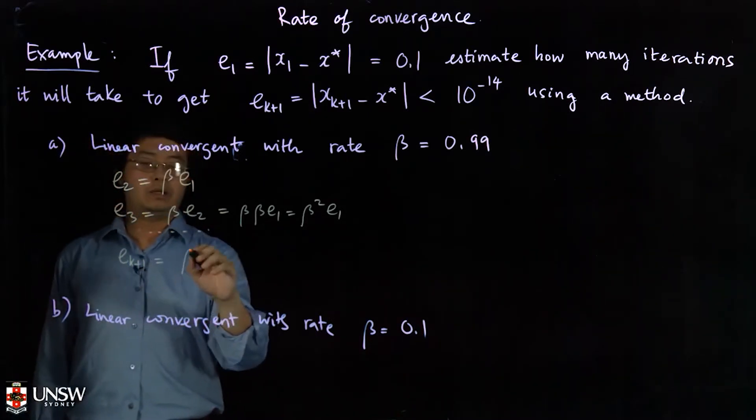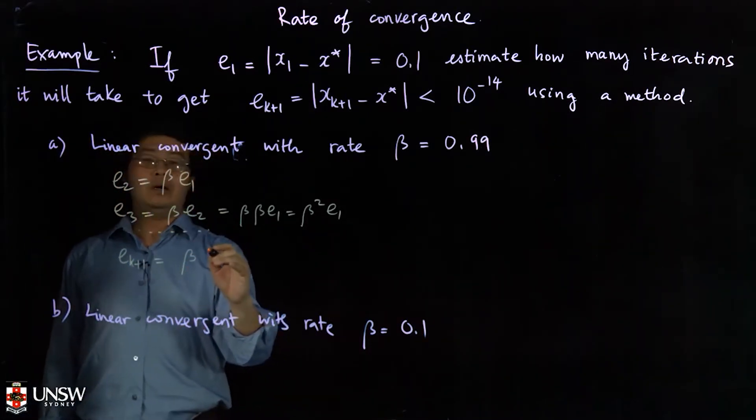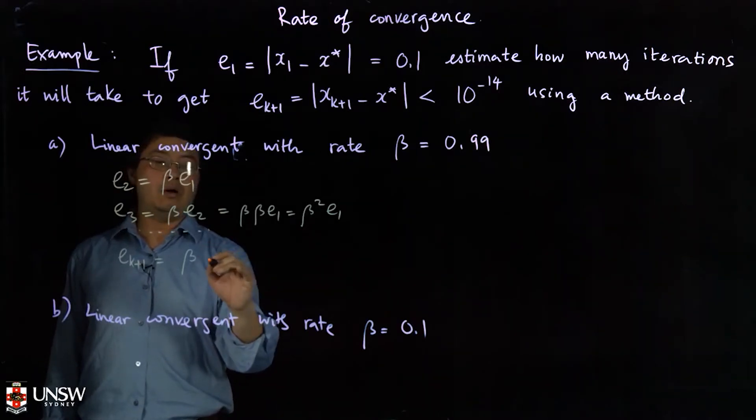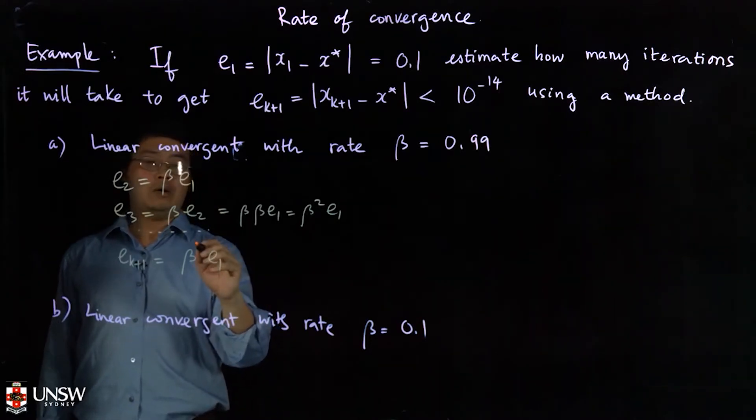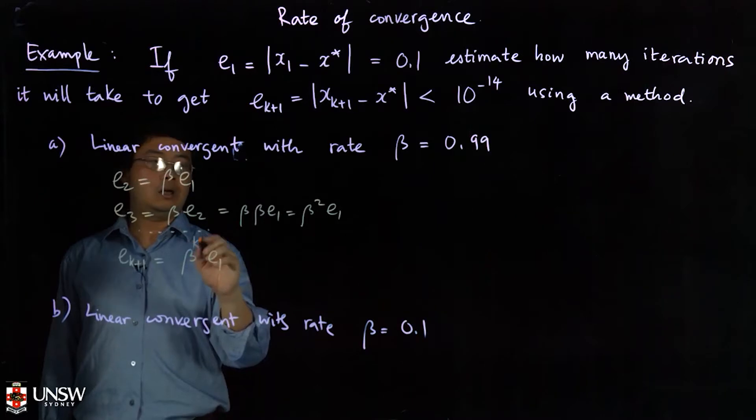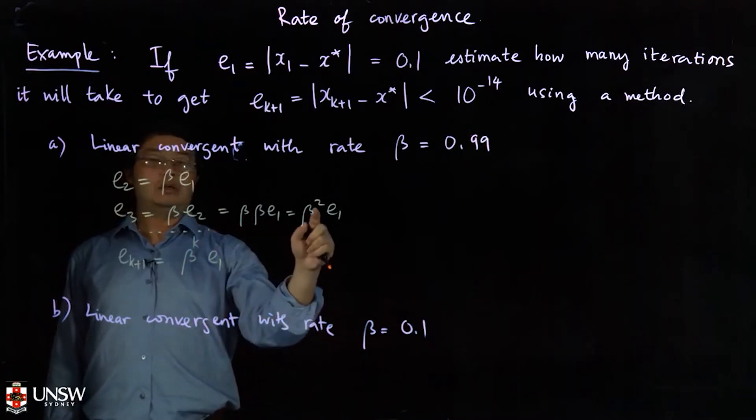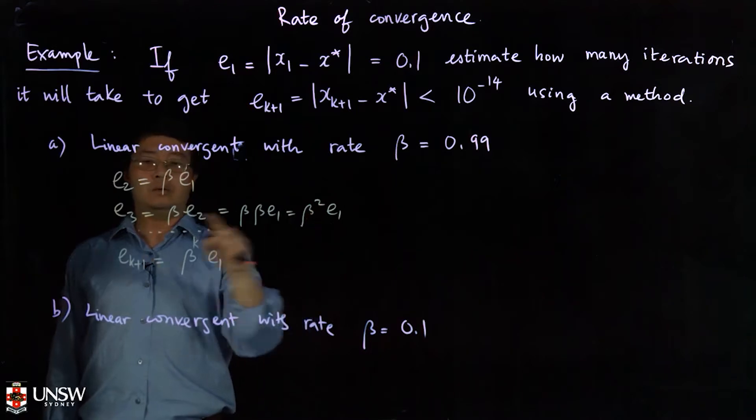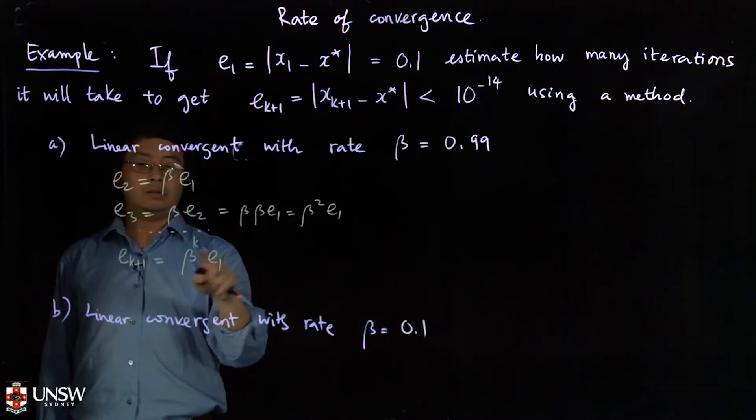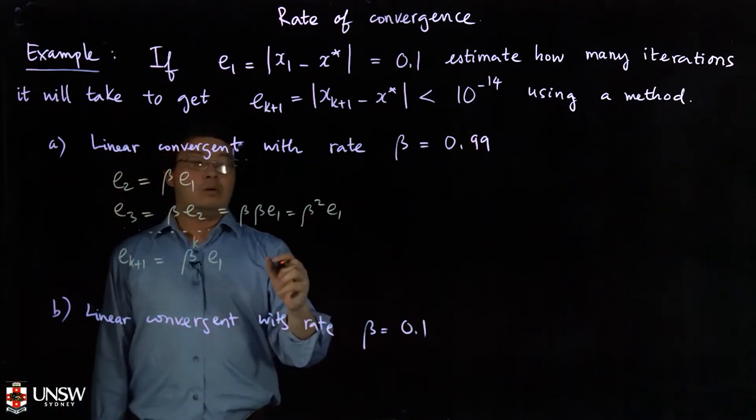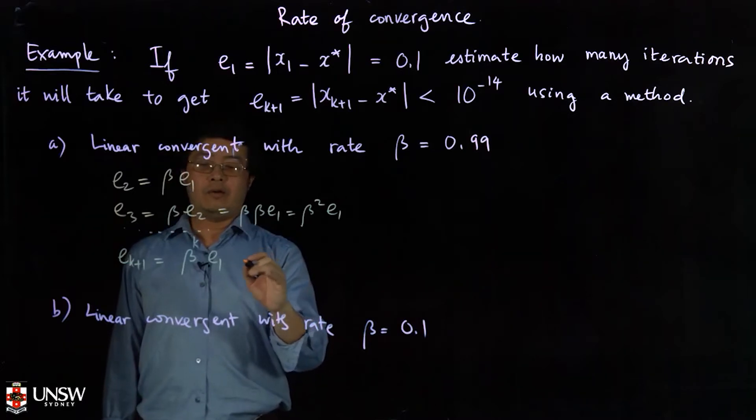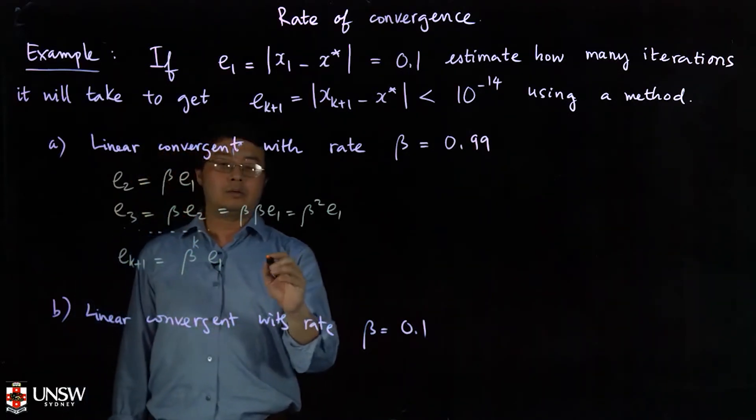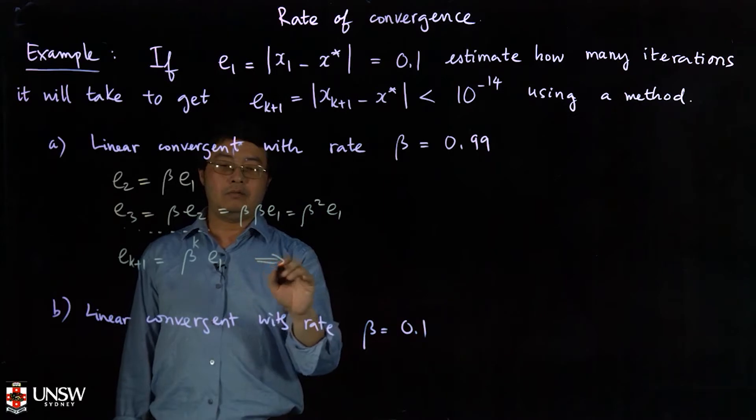And so on, so now you have e4, e5 up to e_{k+1}. So e_{k+1} will equal β^k * e1. The power here should be k. From this equation you can find out k if you know beta, e1, and e_{k+1}.